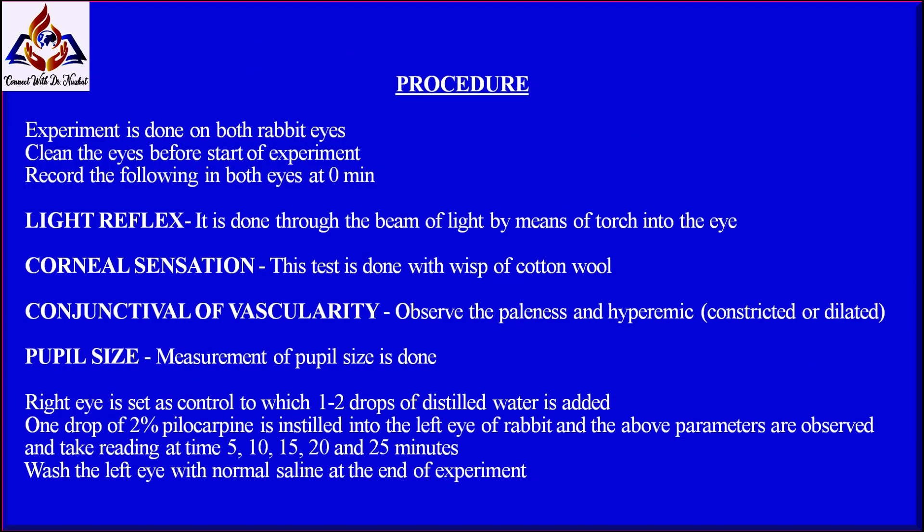The experiment is done on both eyes of a rabbit. Clean the eyes before starting the experiment and record readings on both eyes at zero minutes. The parameters recorded are: first, light reflex — done by directing a beam of light from a torch into the eye; second, corneal sensation — tested with wisps of cotton wool; third, conjunctival vascularity — observe pallor and hyperemia, noting whether vessels are constricted or dilated; fourth, pupil size measurement.